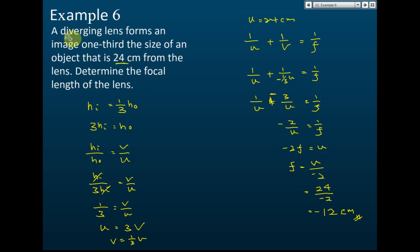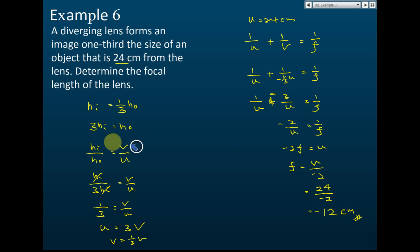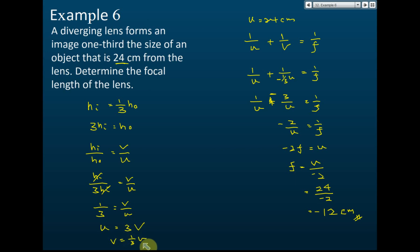A diverging lens forms an image one third the size of an object that is 24 cm from the lens, so the object distance u equals 24 cm. We need to find the focal length f. Since the image is one third the size of the object, three hi equals ho. From hi over ho equals v over u, substituting ho equals three hi and cancelling hi gives v over u equals one over three, so v equals one over three u.